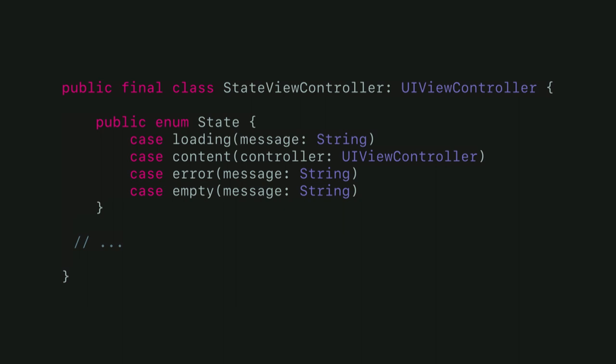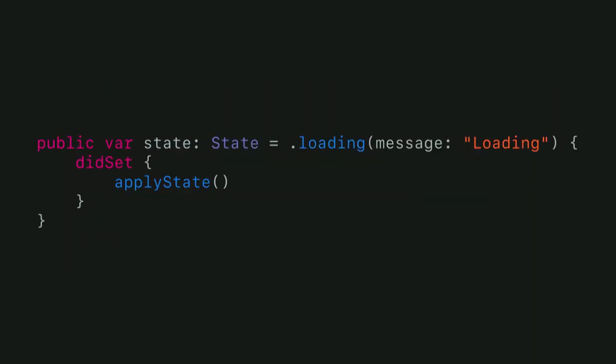iOS comes with built-in containers like UINavigationController and UIPageViewController, but we can create our own. For example, a screen that has loading, loaded, empty, and error states — very common in apps. Implementing everything in a single view controller makes it massive because you handle all these different states. Instead, create a custom container with an enum representing each state. The content state uses a child view controller passed as part of the state, and when it's set, you switch which child is currently presented.